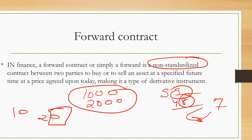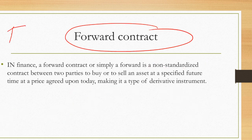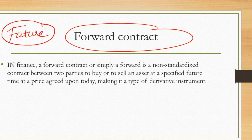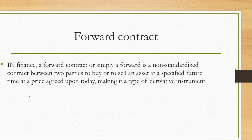There is one thing common in forward and future — these two contracts are made for the future. After 3 months, we have to talk about the options. These two things are made in the future. Now, what is the difference between them? First, understand an example. After that, we will see.